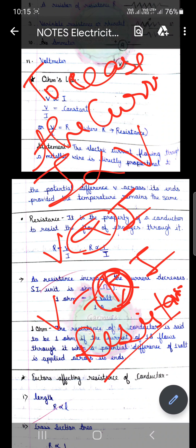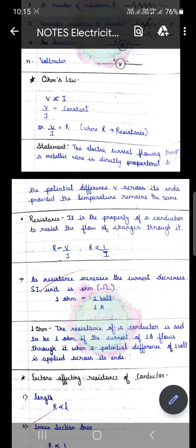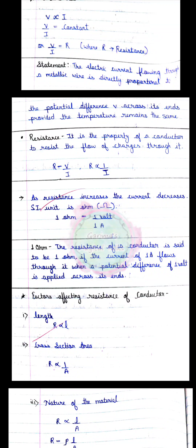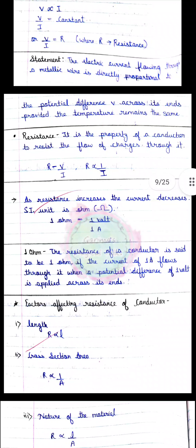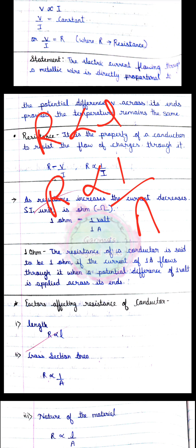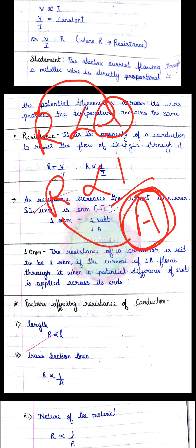Current के flow को कम करना resistance का काम है। Resistance की unit होती है ohm। Resistance किन-किन factors पर depend करता है — resistance is directly proportional to the length of the conductor, and resistance is inversely proportional to the area of cross-section. अगर conductor की length increase होगी तो resistance increase होगा; अगर area of cross-section increase होगा तो resistance decrease होगा।